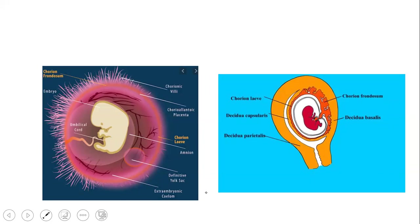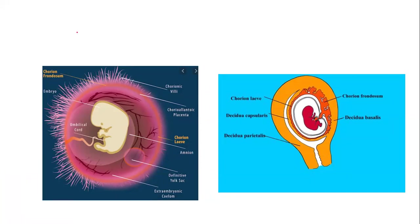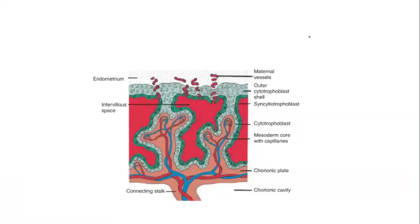Now let us discuss how the placenta is formed — this is often asked as a viva question. From the fourth to fifth month, the placenta has two parts: the fetal part and the maternal part. With respect to the fetal part, you need to know about the chorionic villi — the villi structures that form along the chorion.